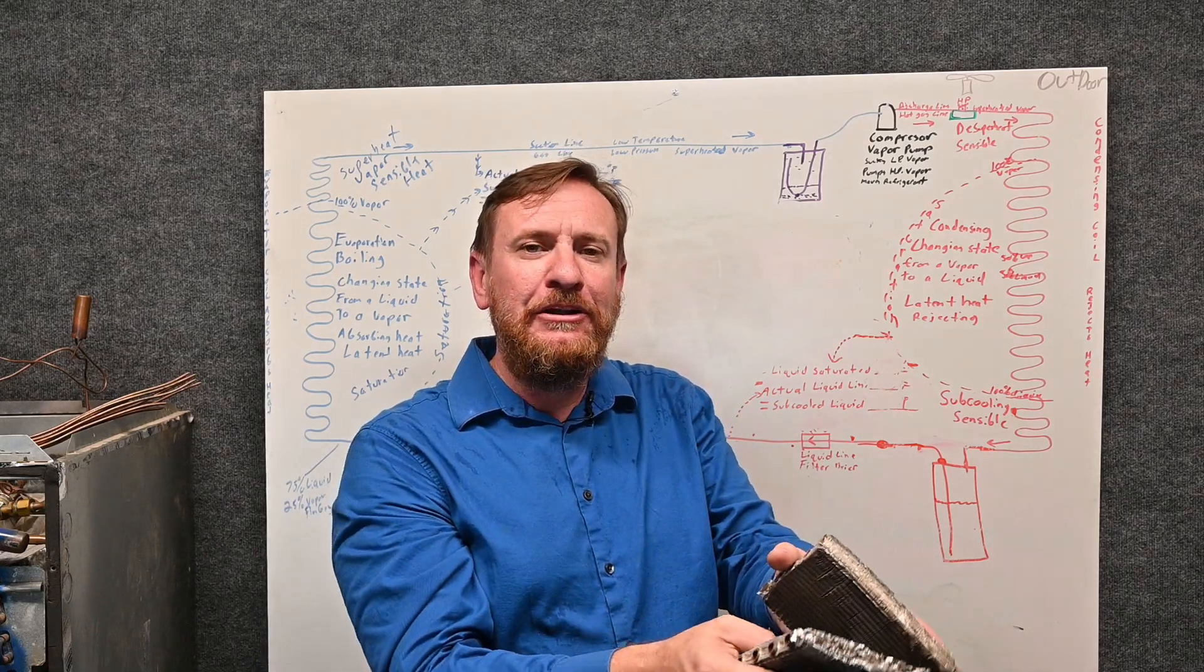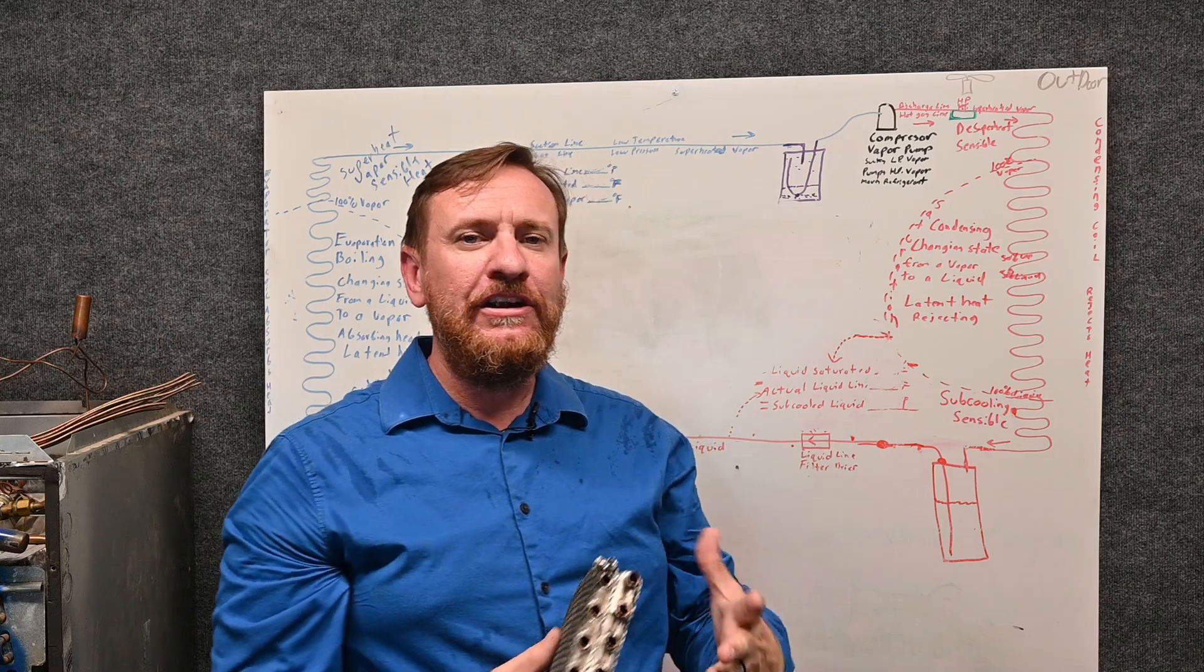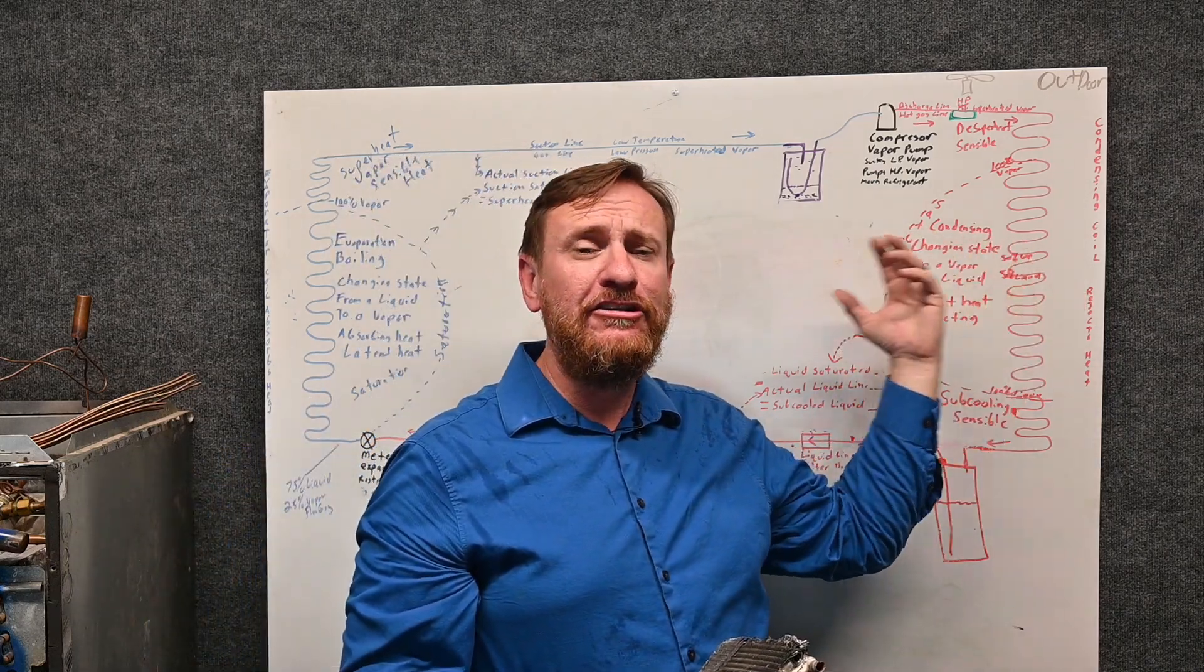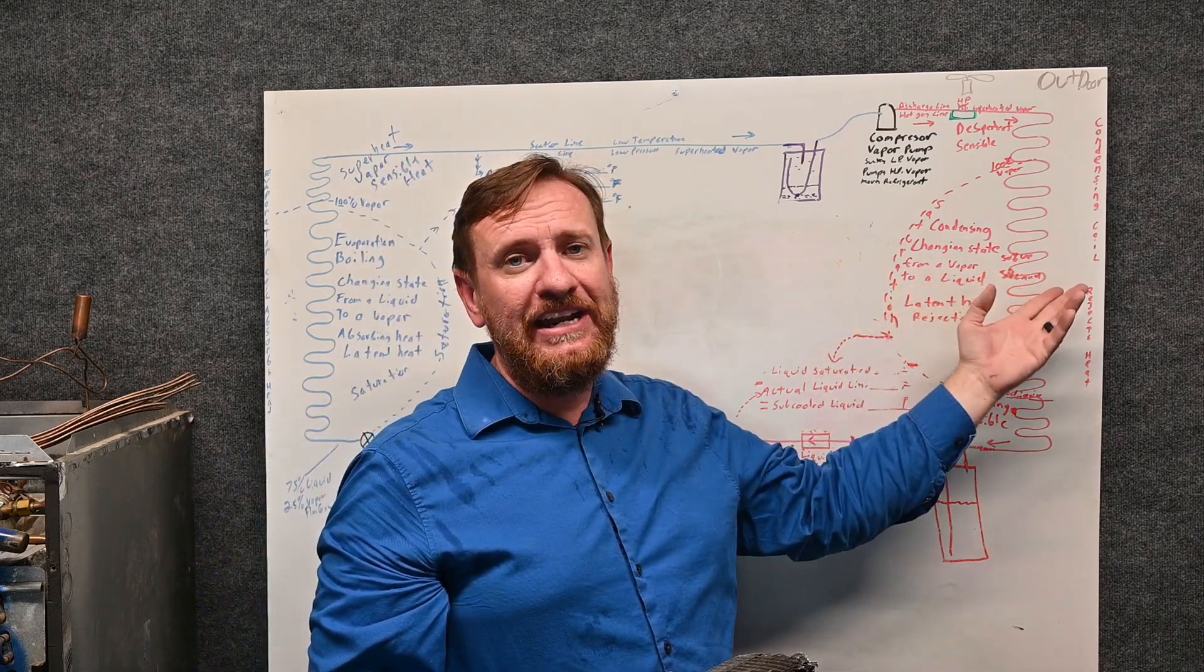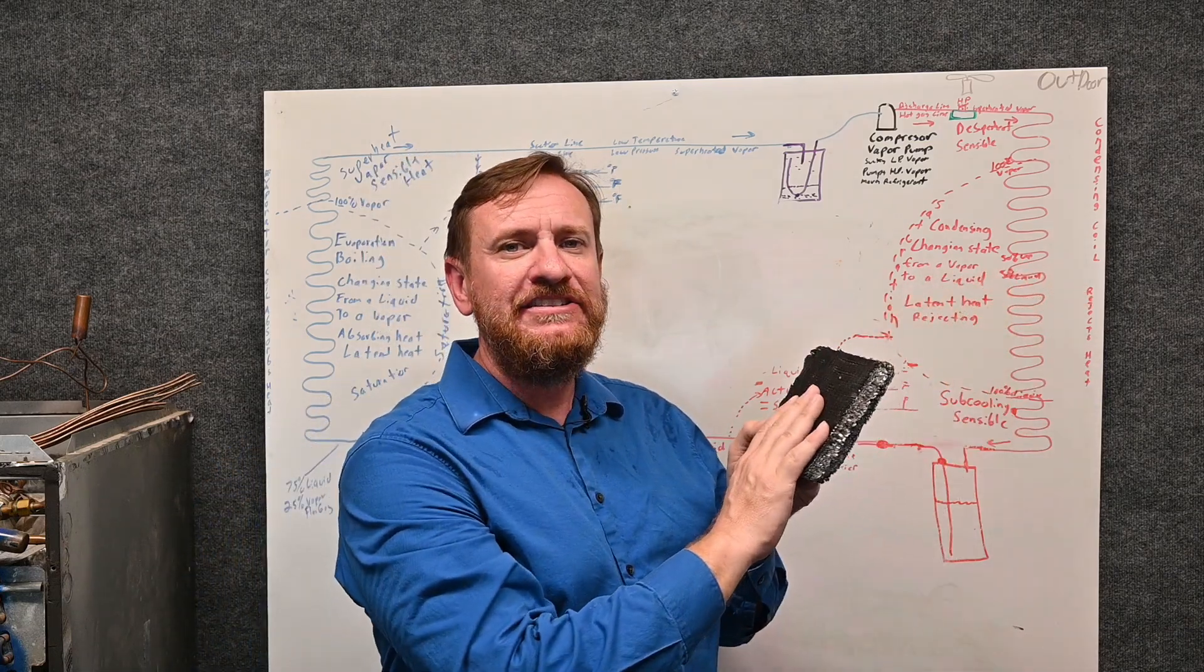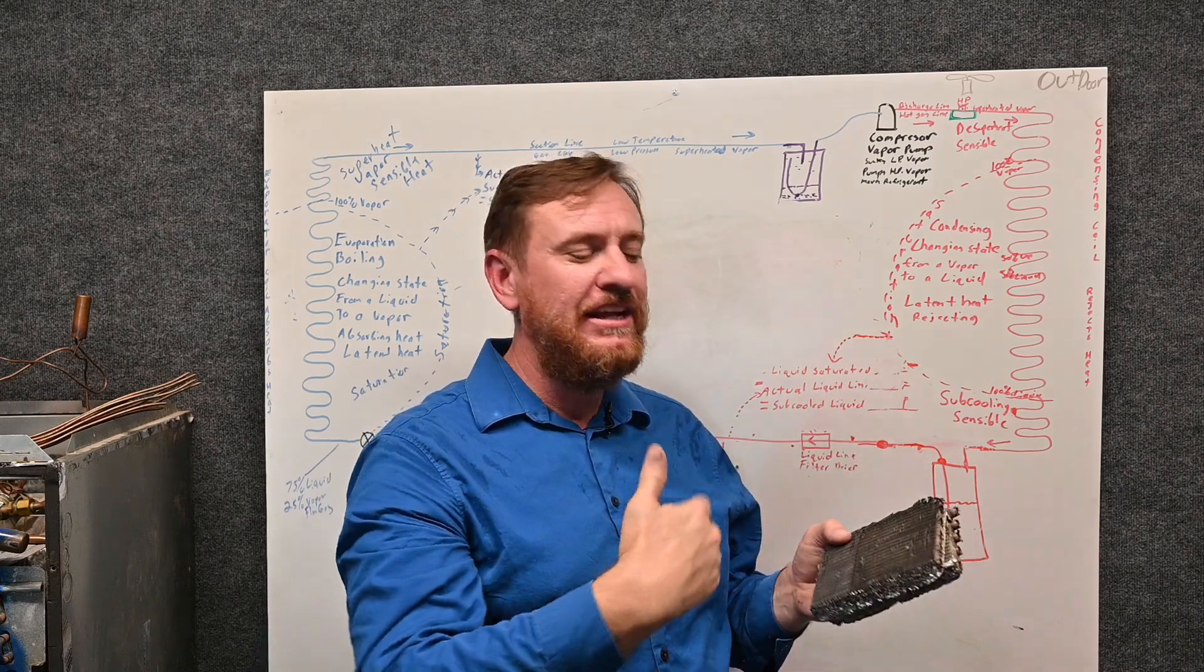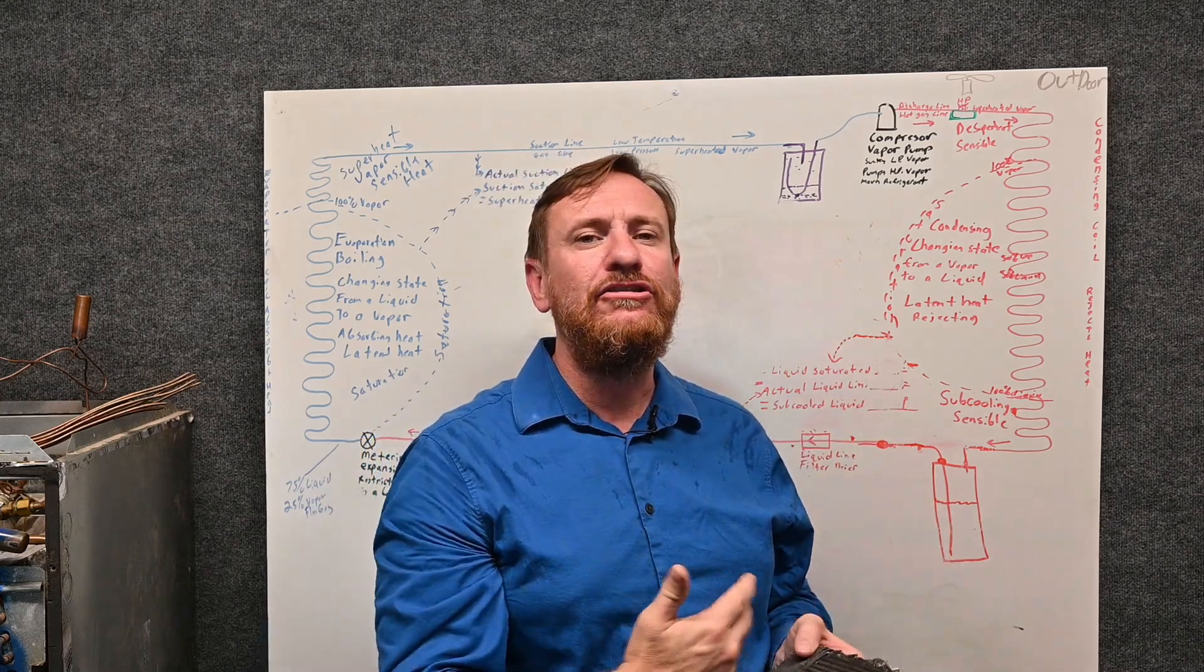That dirt can build up in between there, and that dirt is going to cause a problem with our second law of thermodynamics—it's going to slow down our heat transfer. It's going to do that in two different ways. One, it's going to slow down airflow. Number two, the dirt acts as an insulation, and that insulation, the material type, is going to slow heat transfer. So two things we want to be careful of.